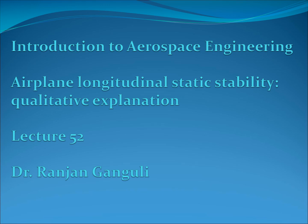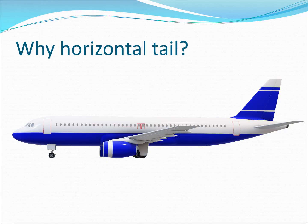Hi students, hope you are doing well. Today we begin lecture 52 in our course on Aerospace Engineering. I'm going to start a qualitative explanation of the airplane longitudinal static stability. In the next lecture I'm going to look at the quantitative explanation, but today we are going to rely less on formulas and more on physical intuition. I'm Dr. Ranjan Ganguly. One of the questions we are going to answer today is why is there a horizontal tail in an aircraft.